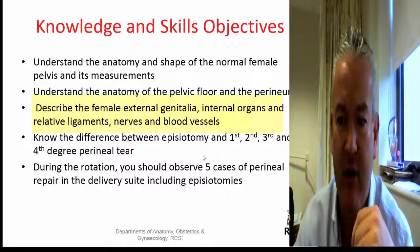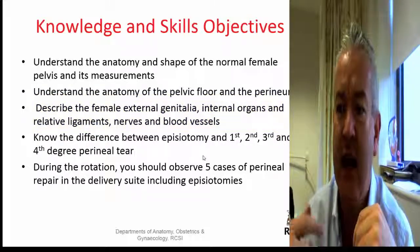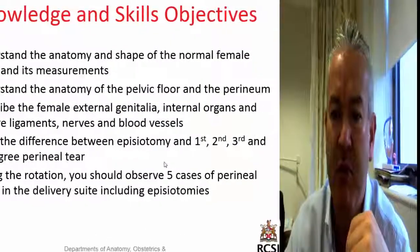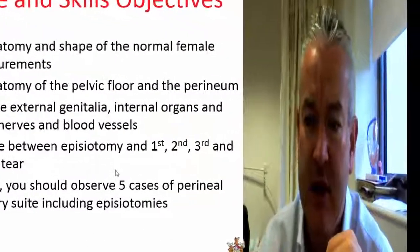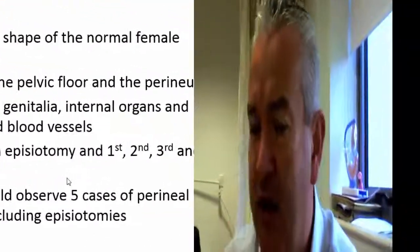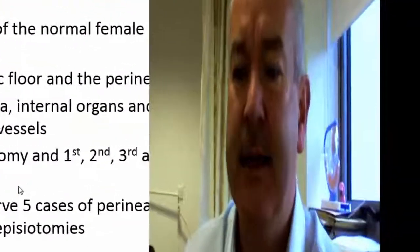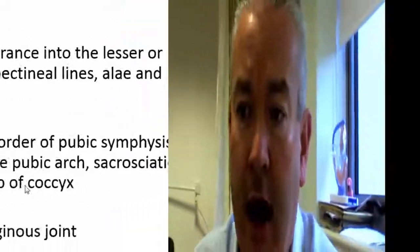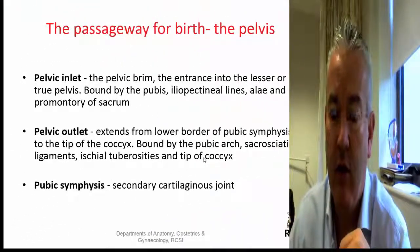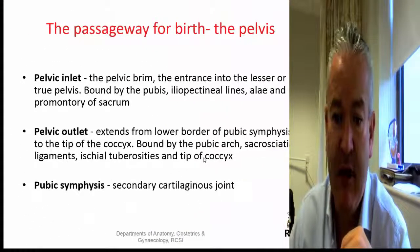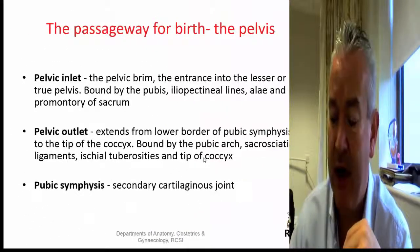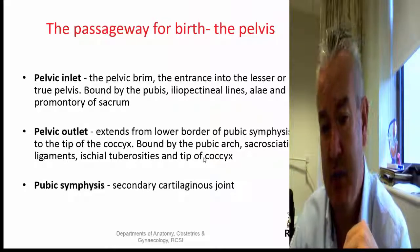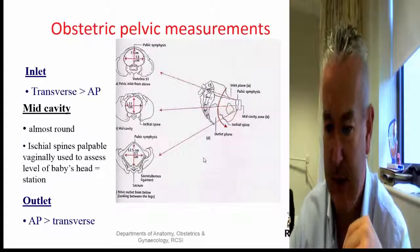To understand the anatomy of the pelvic floor and the perineum, and to describe the external female genitalia, talk about the pelvic inlet, the pelvic outlet, and the pubic symphysis.